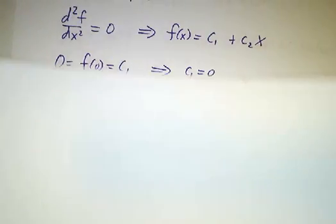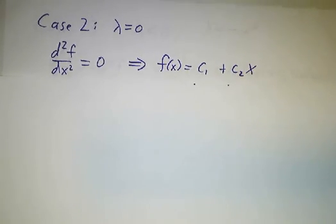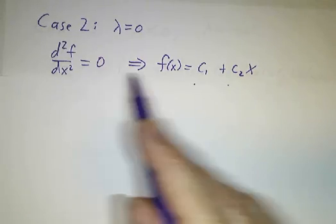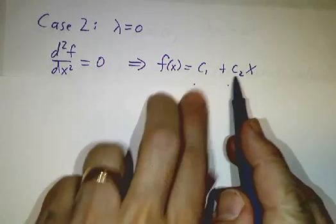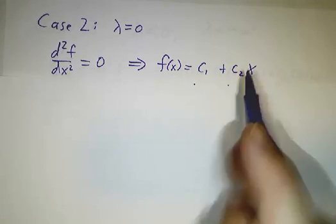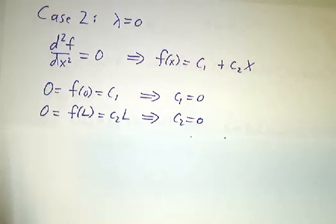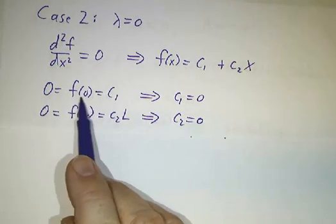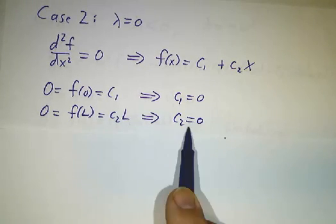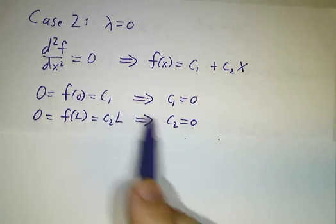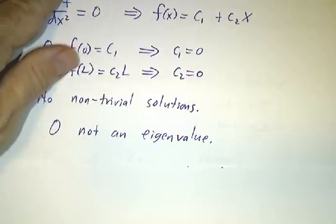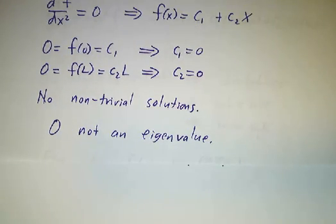Next, we check for zero eigenvalues, solving af equals 0. If the second derivative is 0, the function must be c1 plus c2 times x. The value at 0 gives c1 equals 0, and the value at L gives c2 equals 0. So the only solution is f equals 0 — no non-trivial solutions, meaning 0 is not an eigenvalue.